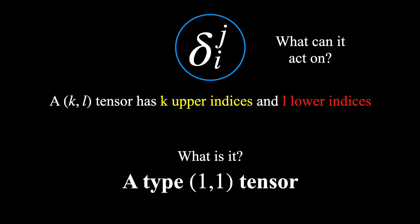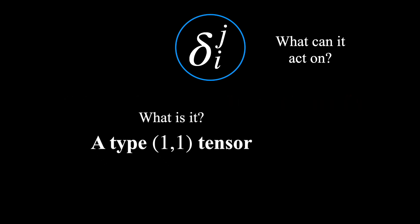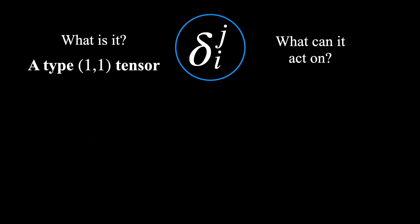And using this rule, we can now answer the first question. Since the Kronecker Delta has one upper index and one lower index, it must be a type (1,1) tensor.